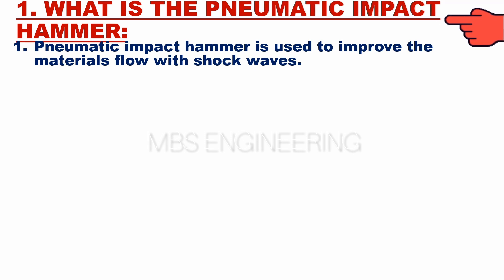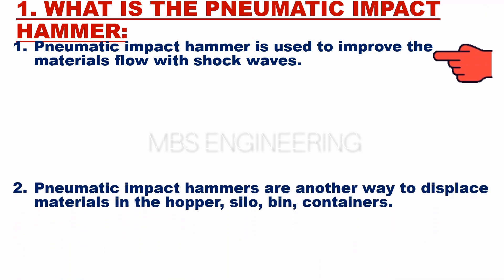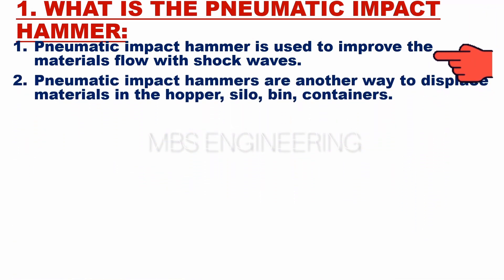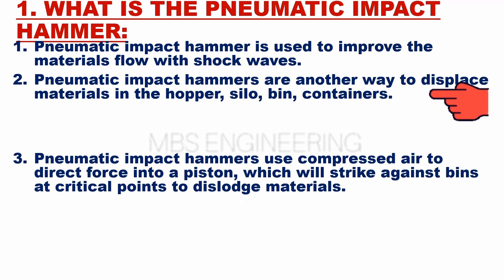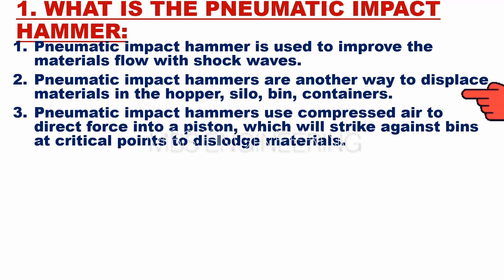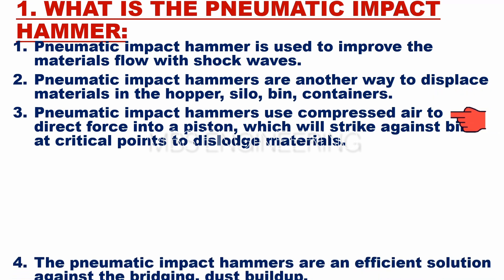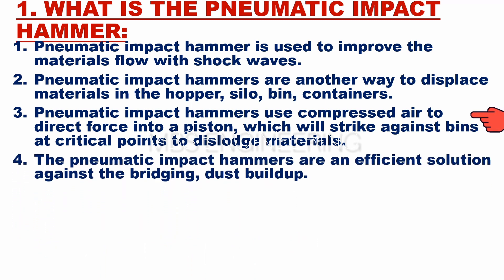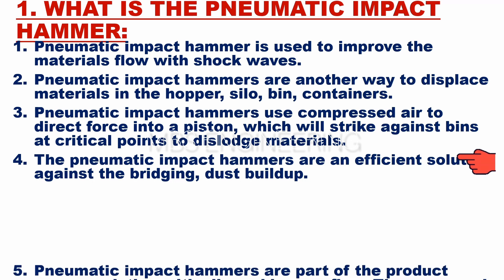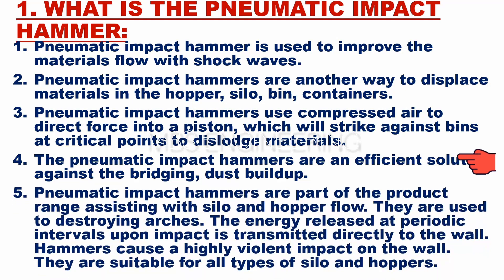A pneumatic impact hammer is used to improve material flow with shock waves. Pneumatic impact hammers are another way to displace materials in the hopper, silo, bin, and containers. Pneumatic impact hammers use compressed air to direct force into a piston, which will strike against bins at critical points to dislodge materials.